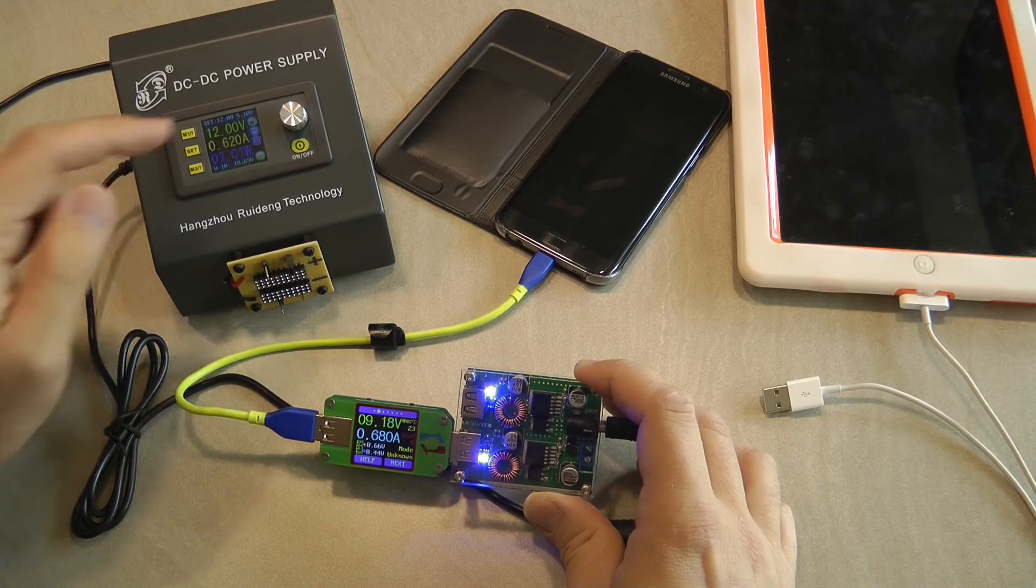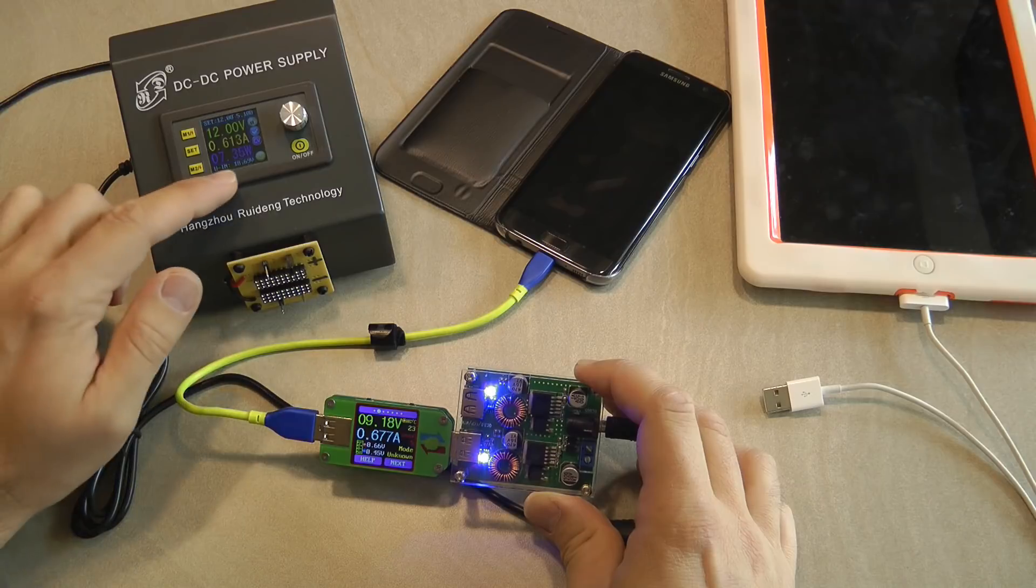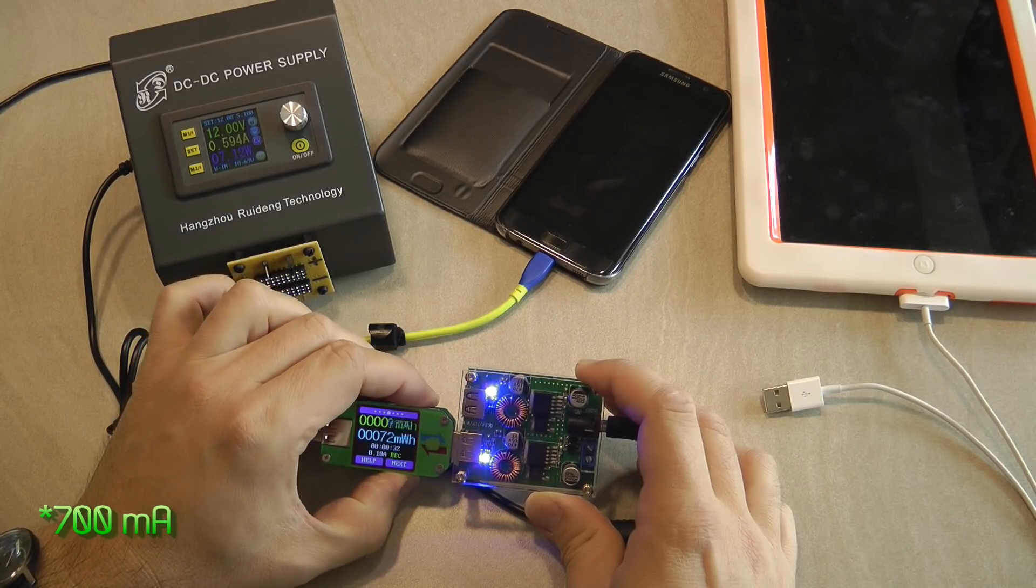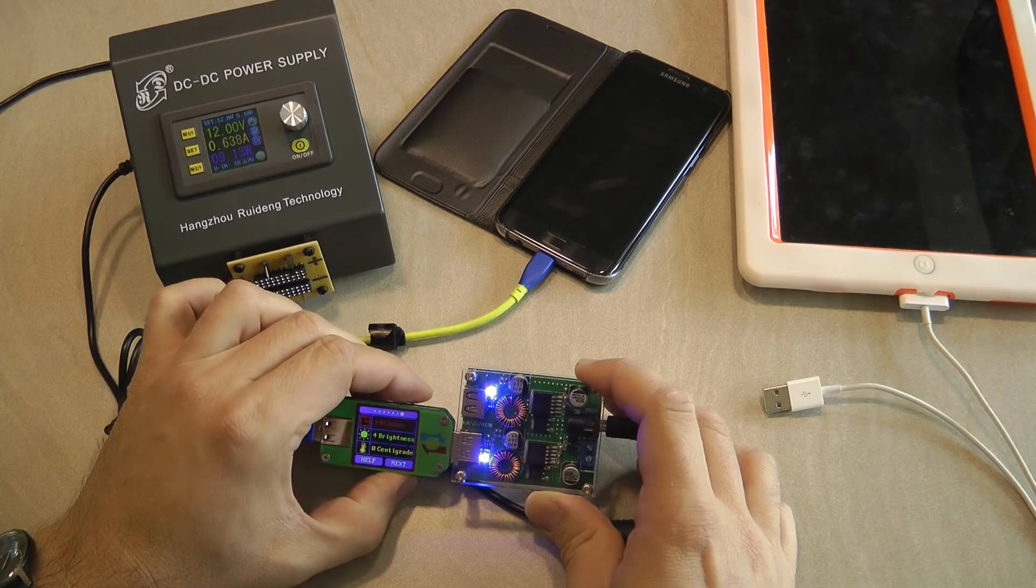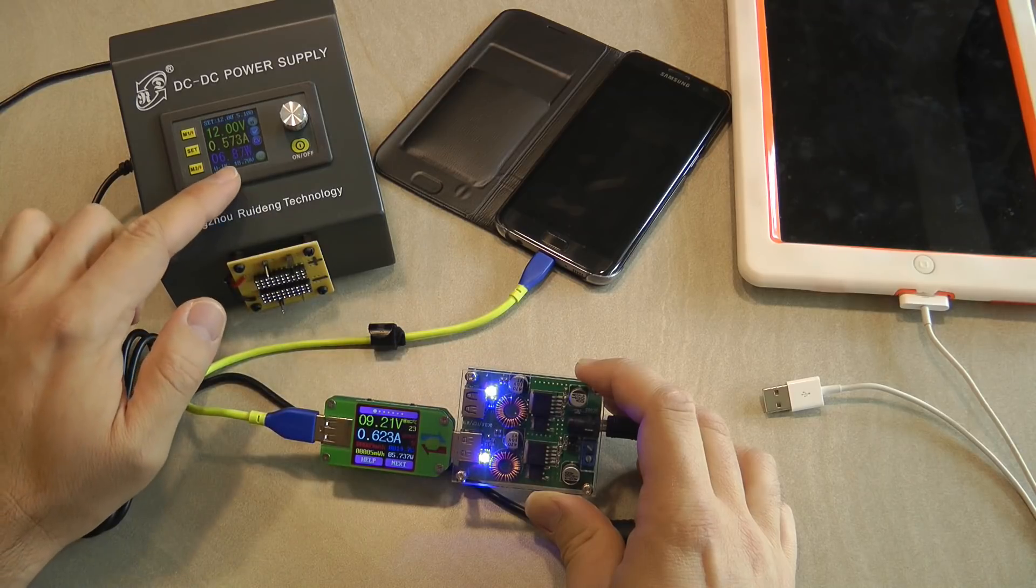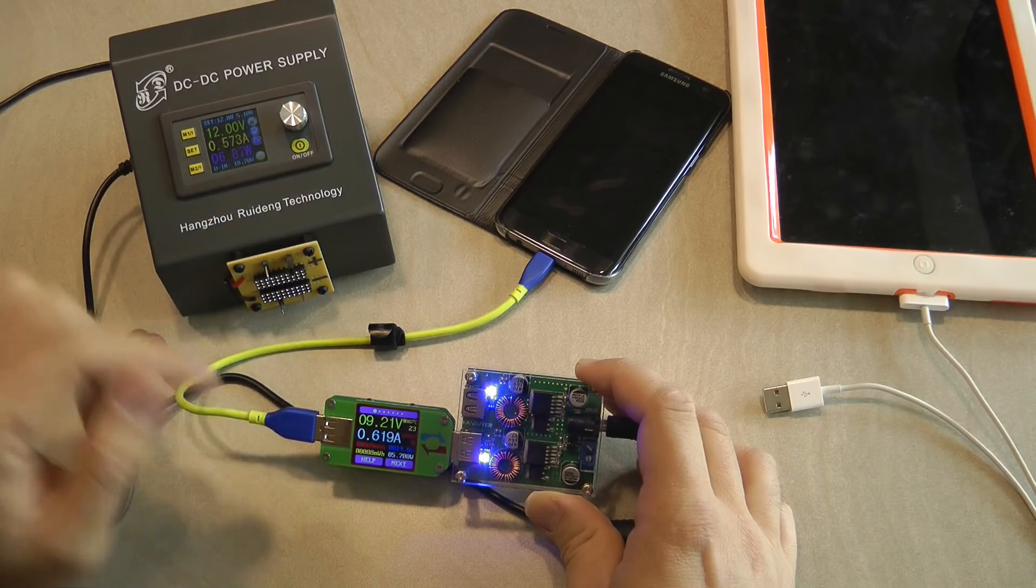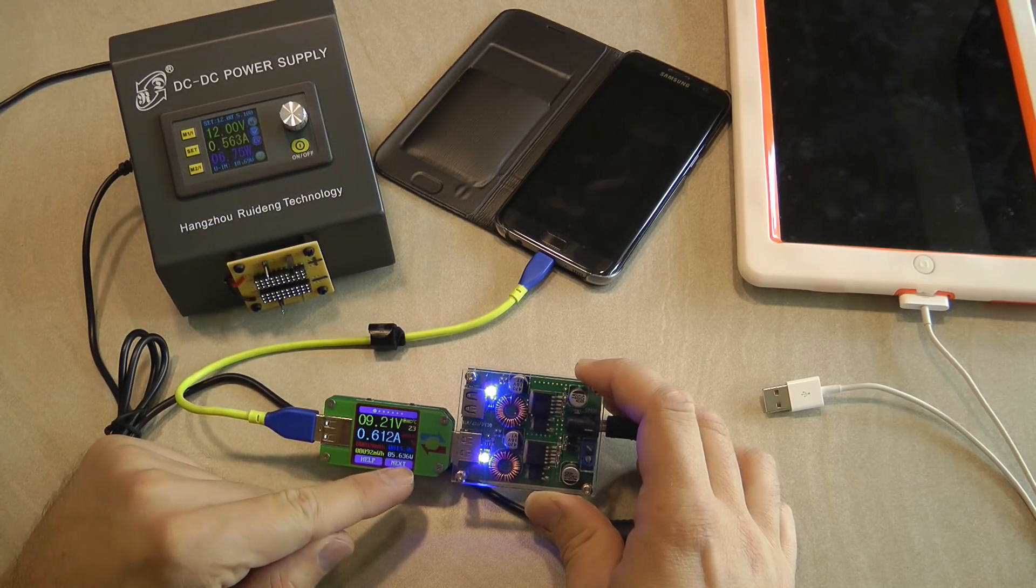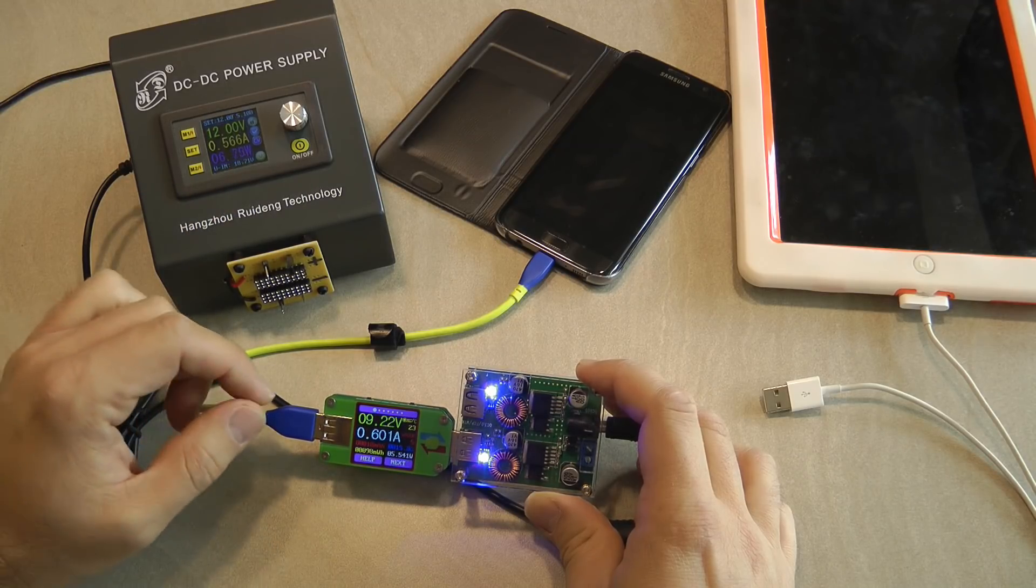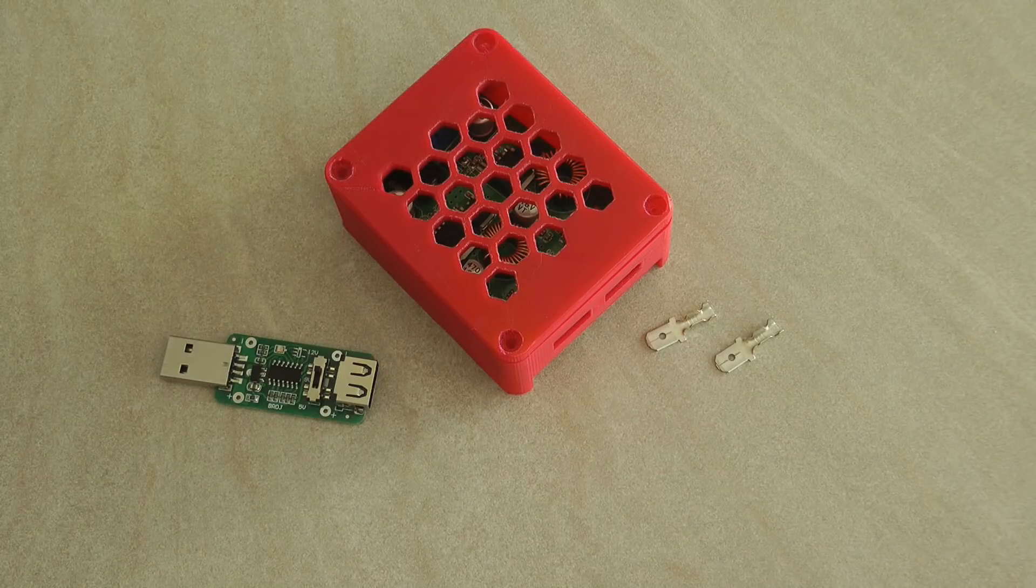As you can see, we are drawing about 7 amps on the power supply. They're claiming that the efficiency is 92%. Well, it doesn't appear that way, but maybe my measurements are off. Five watts was going out, almost eight watts being drawn.